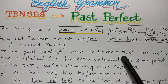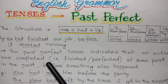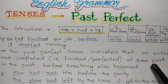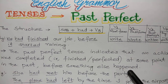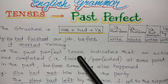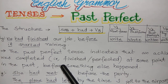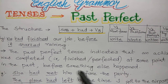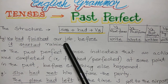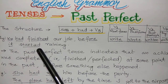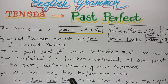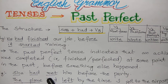The past perfect tense indicates that an action was completed — that is, finished or perfected — at some point in the past, before something else happened. We use the past perfect tense to indicate an earlier action, and there is another action which happened later. For example: 'We had finished our job before it started raining' — this is the earlier action; 'it started raining' is the later action. Another example: 'She had met him before the party' — the first action is in past perfect: 'had met'; 'met' is the past participle of 'meet'.